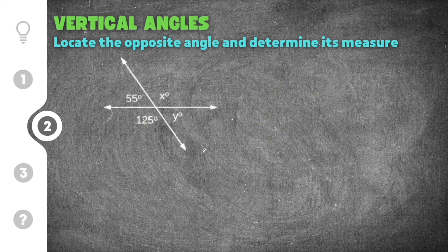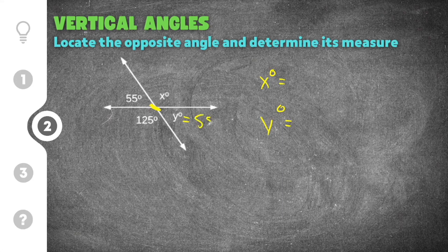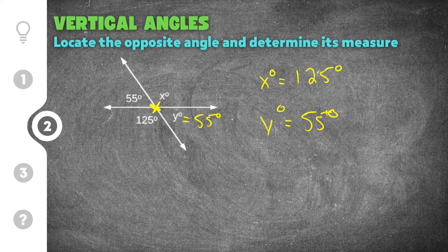Moving on to the second practice problem. This problem also has two intersecting lines — one angle is 55 degrees and another is 125 degrees — and asks for the measure of angle x and angle y. Starting with 55 degrees: it is diagonally across from angle y, so y is also 55 degrees. That leaves 125 degrees as the vertical angle with x, so x is 125 degrees.